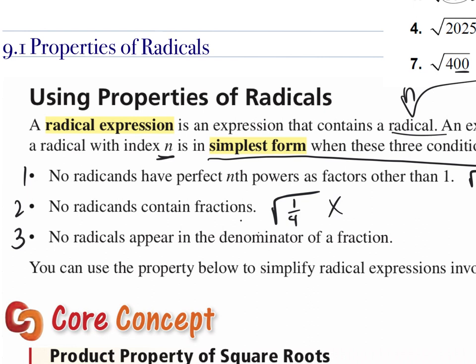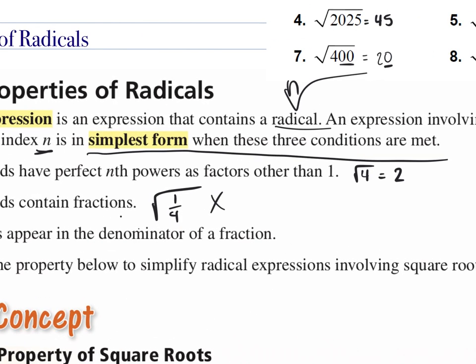And number 3 says no radicals can appear in the denominator of a fraction. So you're not going to be able to leave your answer as 1 over the square root of 2. You'll have to be able to simplify it. We're going to start one at a time, and I'm going to show you how to simplify these in each case.